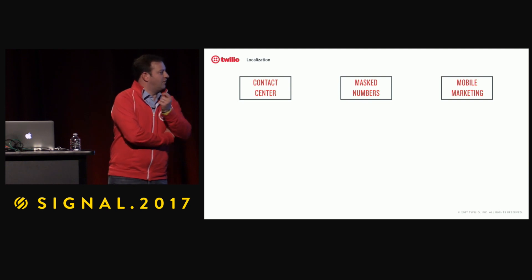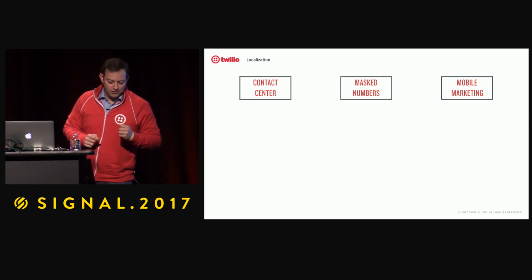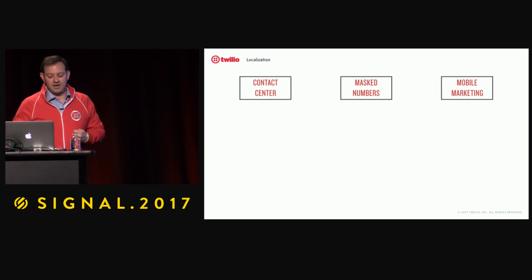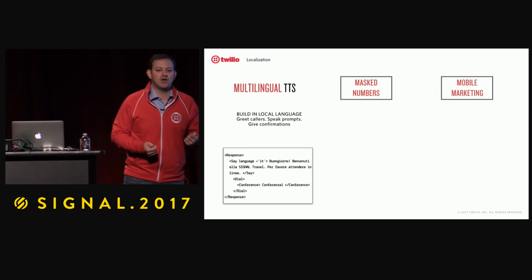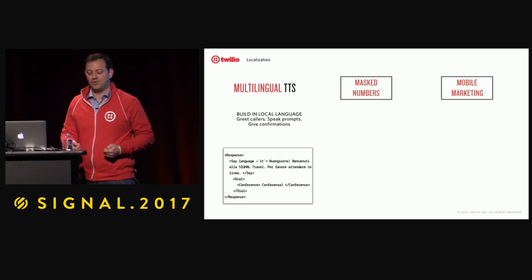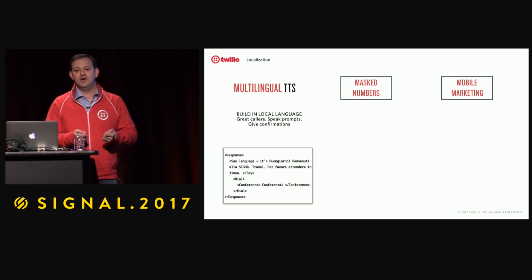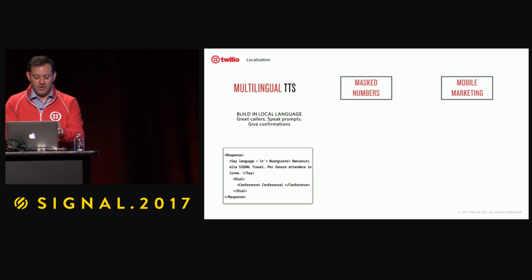I'd like to talk about three features you can take advantage of when it comes to localizing the experience of your application as it goes global. Going back to the use cases we talked about at the beginning, for the contact center use case, one feature you have access to is called multilingual text-to-speech. In my earlier example you saw a typical IVR experience in English, which worked fine going from UK to US. But as I go into another country - say Italy - I'd like to be able to quickly localize that app experience. Let's take a look at how I would do that with Signal Travel.